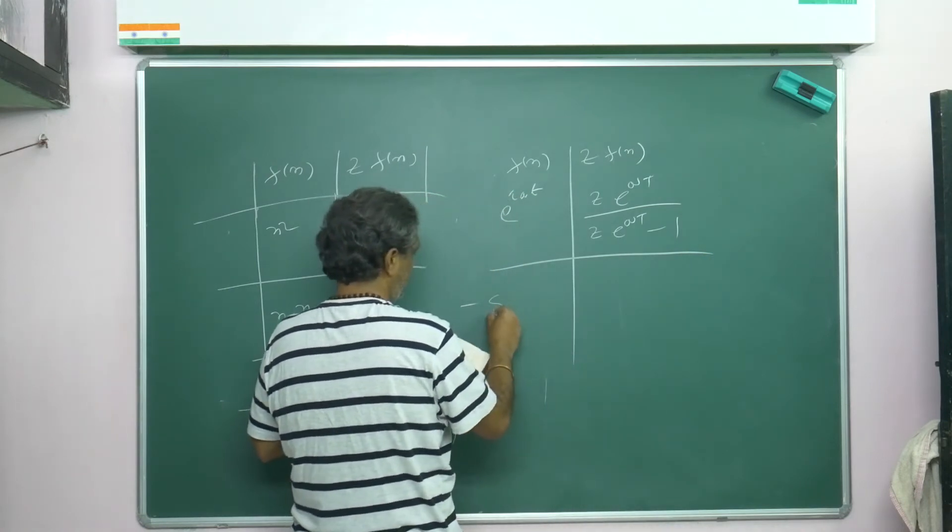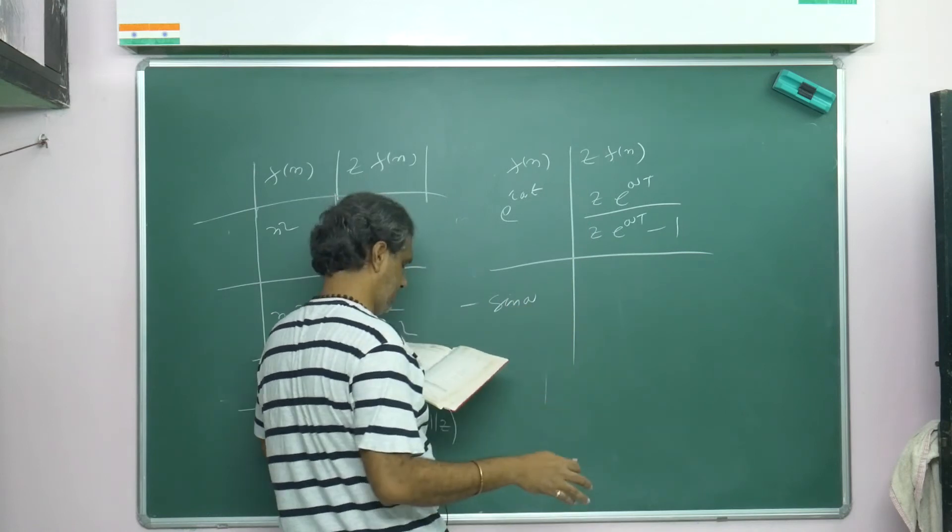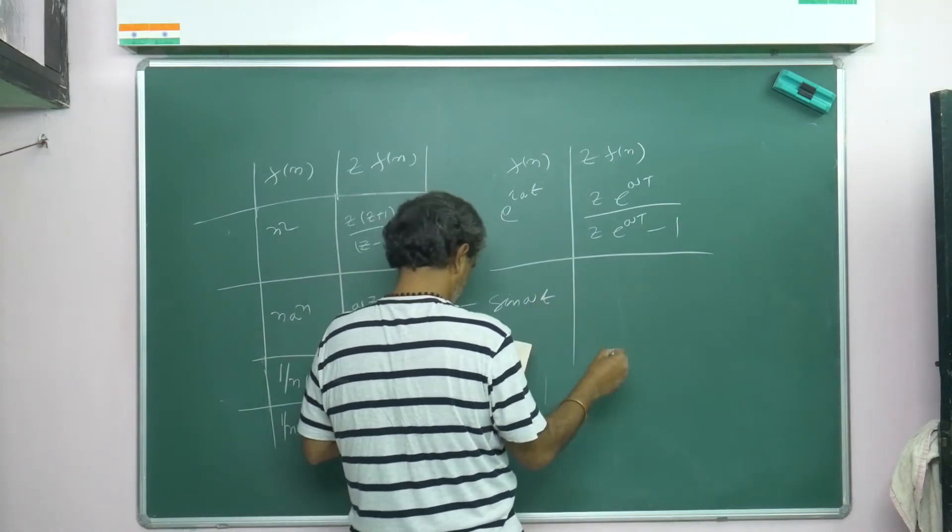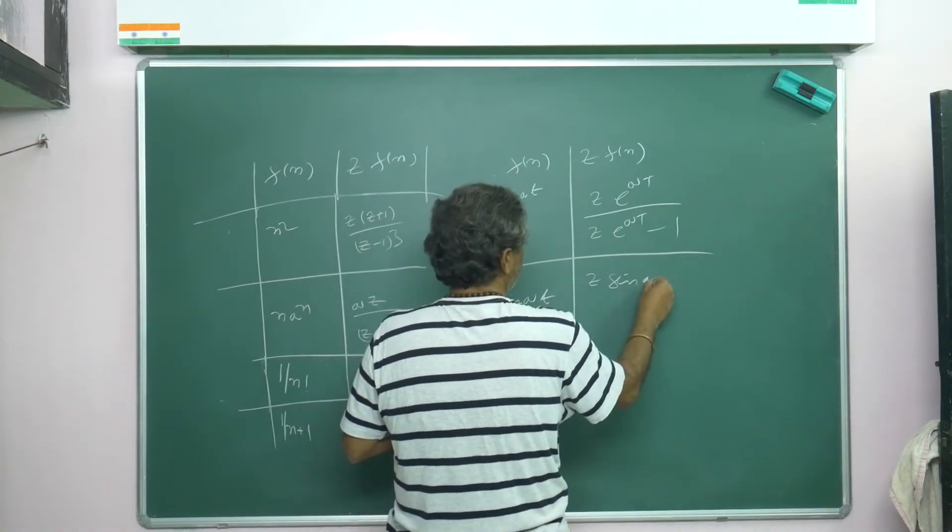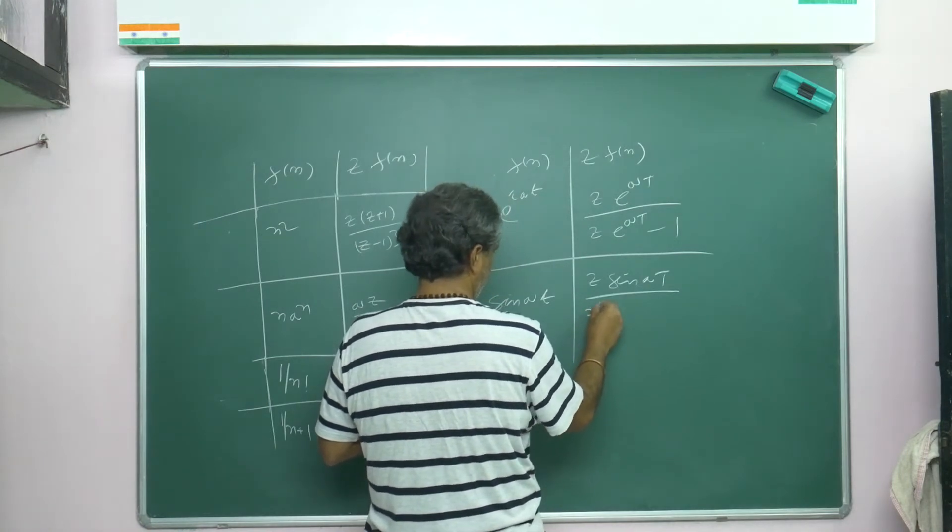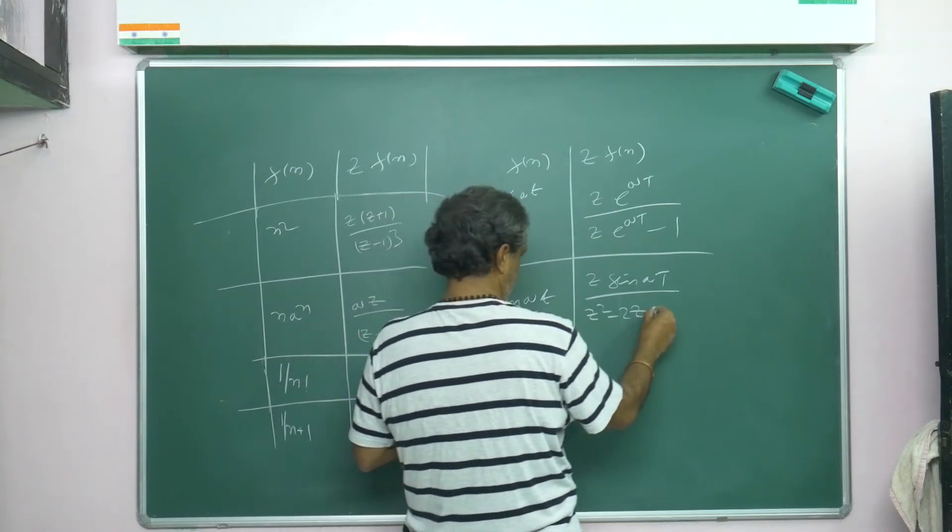Then sin(aT). From this they will write actually real part and imaginary part, they will separate with sine and cosine with the small t. This is: Z{sin(aT)} = z·sin(aT)/(z² - 2z·cos(aT) + 1).